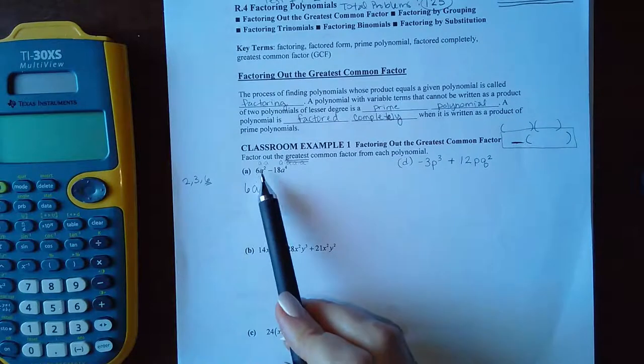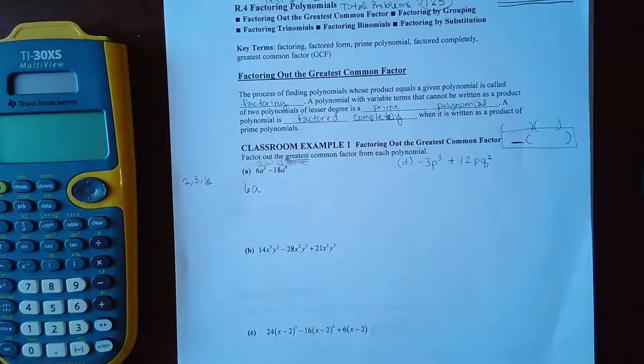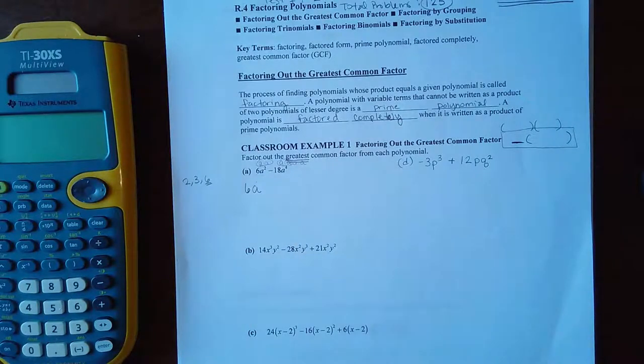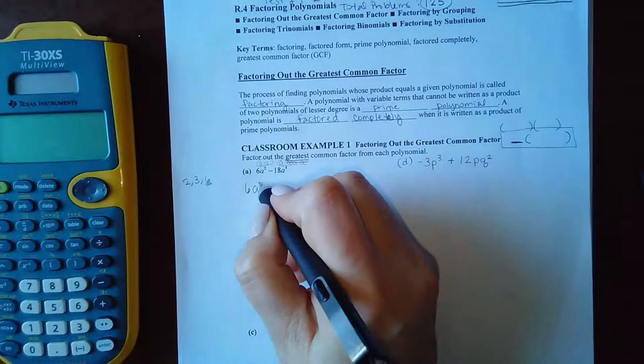So how many A's do each of them share? They each have at least two. I can't take out any more than two because they don't have any more than two in common. I couldn't take out three because this guy doesn't have three. So they don't have three in common.